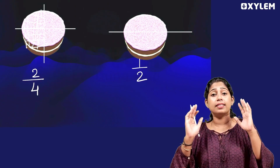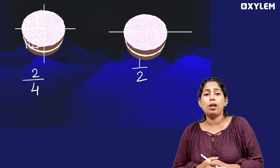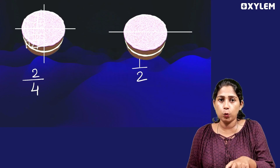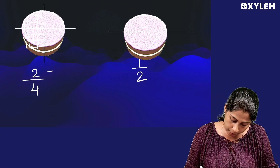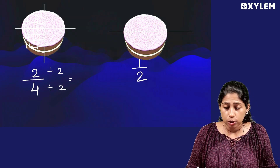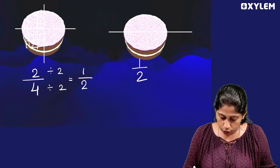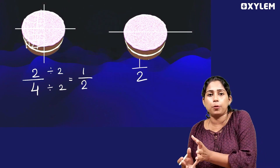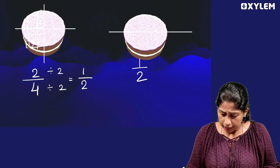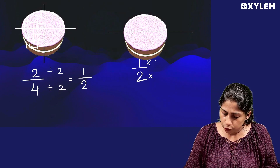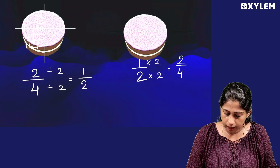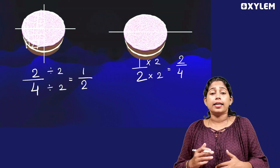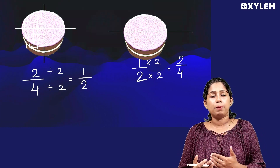Now, if I simplify 2 by 4: numerator 2 divided by 2 is 1, denominator 4 divided by 2 is 2. So 2 by 4 simplifies to 1 by 2. Conversely, if I multiply 1 by 2 by 2, I get 2 by 4. So you can multiply or divide to find equivalent fractions. This is the equivalent fraction concept.